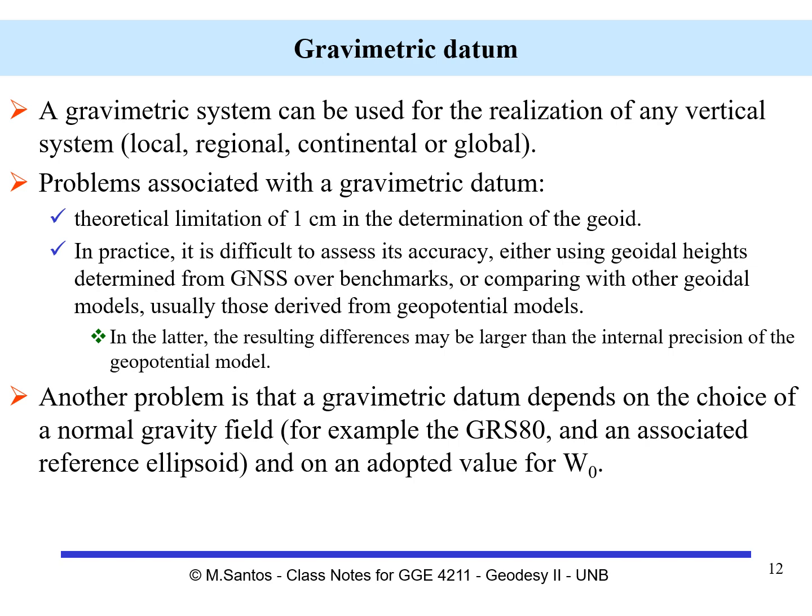The problems associated with the gravimetric datum include a theoretical limit in terms of its precision: one centimeter. In practice, it is difficult to assess its accuracy. We either have to use geoidal heights determined from tracking of GNSS over benchmarks, or compare a geoidal model with another geoidal model, usually those derived from geopotential models.